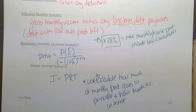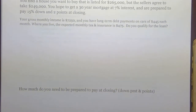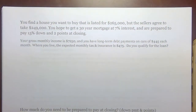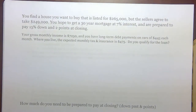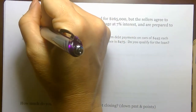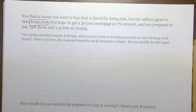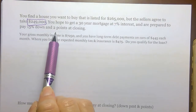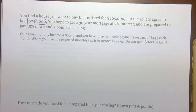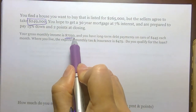Now we're going to work through the process of financing and buying a house from start to finish. Go slowly, make sure you understand the terms. You find a house listed for $265,000, but the sellers agree to a purchase price of $249,000. You're applying for a 30-year mortgage at 7% interest, and you're prepared to pay 15% down and two points at closing. First, we need to figure out whether you can expect to get the loan. Your gross monthly income is $7,250.